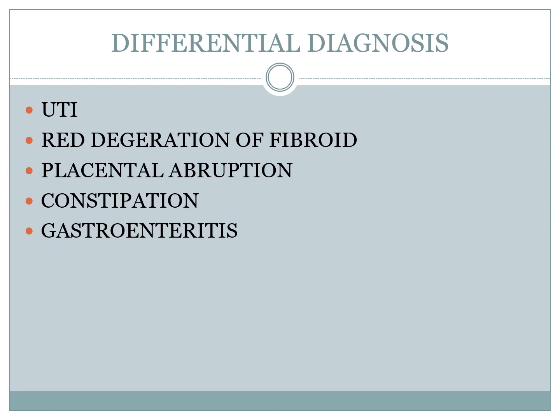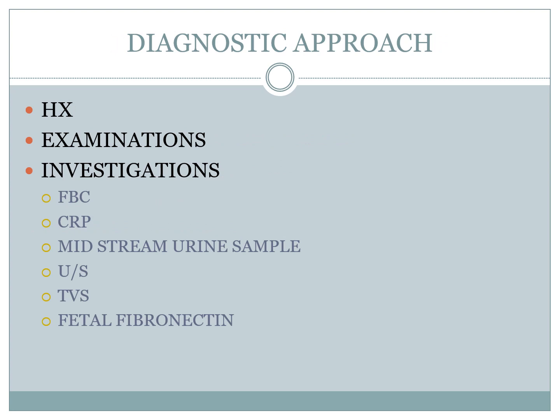Differentials include UTI, degeneration of fibroids, abruption, constipation, and gastroenteritis. For the diagnostic approach, history cannot be emphasized enough, along with physical examination, and investigations including CBC, CRP, urine sample, ultrasound, and fetal fibronectin.